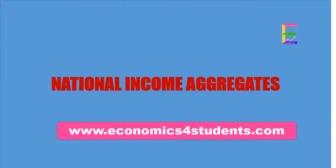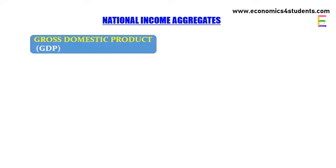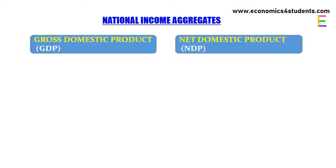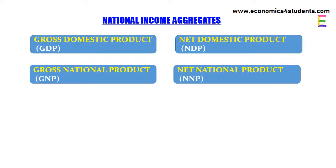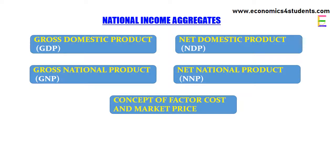Welcome to Economics for Students. In this video we are going to discuss some aggregates related to national income which will help us to measure national income, such as gross domestic product, net domestic product, gross national product, net national product, and the concept of factor cost and market price. Moreover, we will explain how to convert GDP to NDP, NDP to GDP, GDP to GNP, and GNP to GDP.